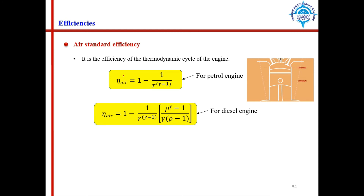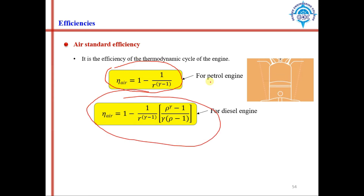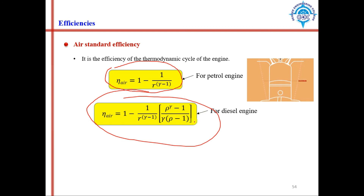Air standard efficiency equations will be derived in the heat engine chapter. For a petrol engine it is: 1 − 1/(R^(γ−1)). For a diesel engine it is: 1 − [1/(R^(γ−1))] × [(ρ^γ − 1)/(γ(ρ − 1))]. The variables R (compression ratio), γ, and ρ will be explained in the heat engine chapter.